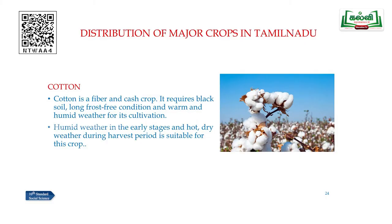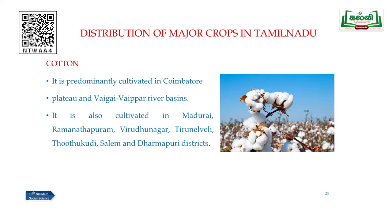Cotton is a fiber and cash crop. It requires black soil, long frost-free conditions, and warm and humid weather for cultivation — humid weather in the early stage and hot and dry weather during the harvest period. Cotton is predominantly cultivated in the Coimbatore plateau and the Vaigai and Viper river basins, and also in the districts of Madurai, Ramanathapuram, Virudhunagar, Tirunelveli, Thoothukudi, Salem and Dharmapuri.